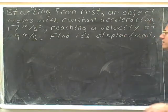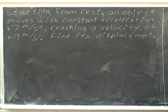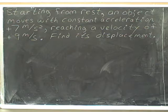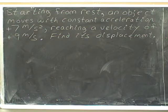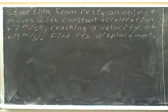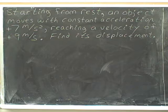Here's another problem. Starting from rest, an object moves with constant acceleration of positive 7 meters per second squared, reaching a velocity of positive 9 meters per second. Find its displacement. Starting from rest, an object moves with constant acceleration of positive 7 meters per second squared, reaching a velocity of positive 9 meters per second. Find its displacement.